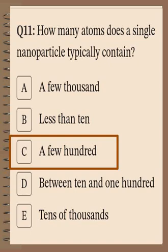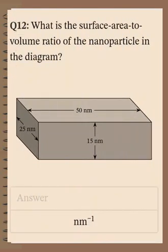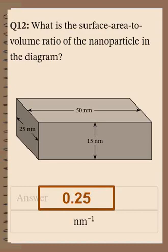Question number 12: What is the surface area to volume ratio of a nanoparticle with length 50, width 25, and height 15 nanometers? We calculate volume and surface area, then surface area over volume. The answer will be 0.25 nanometer, which confirms this substance is on the nanoscale — it may be less than one.